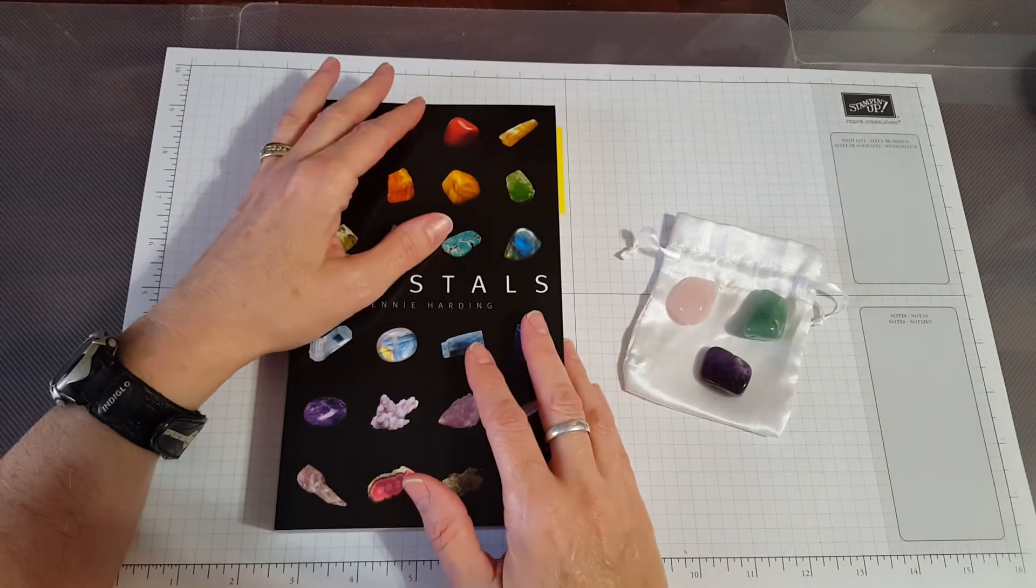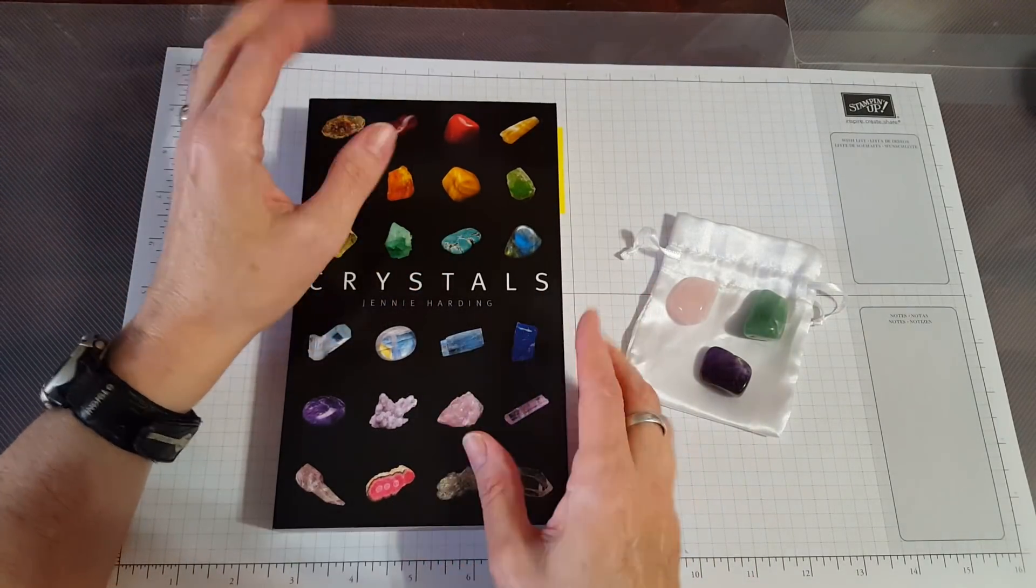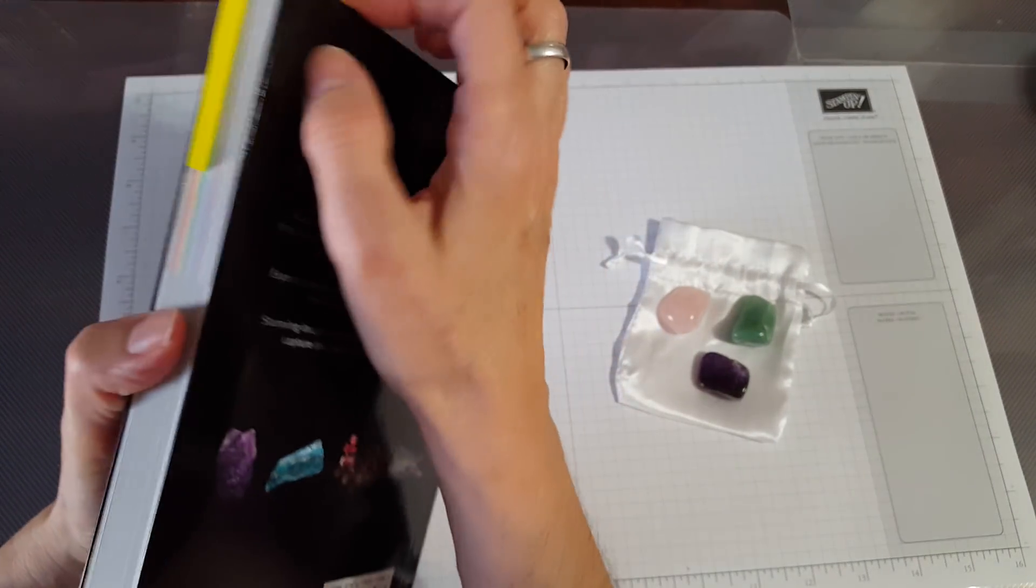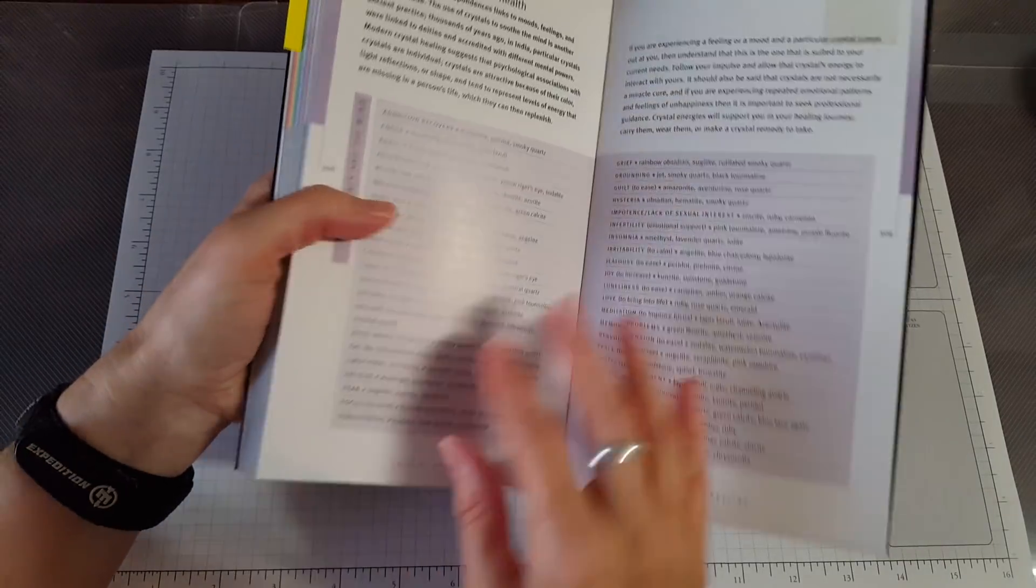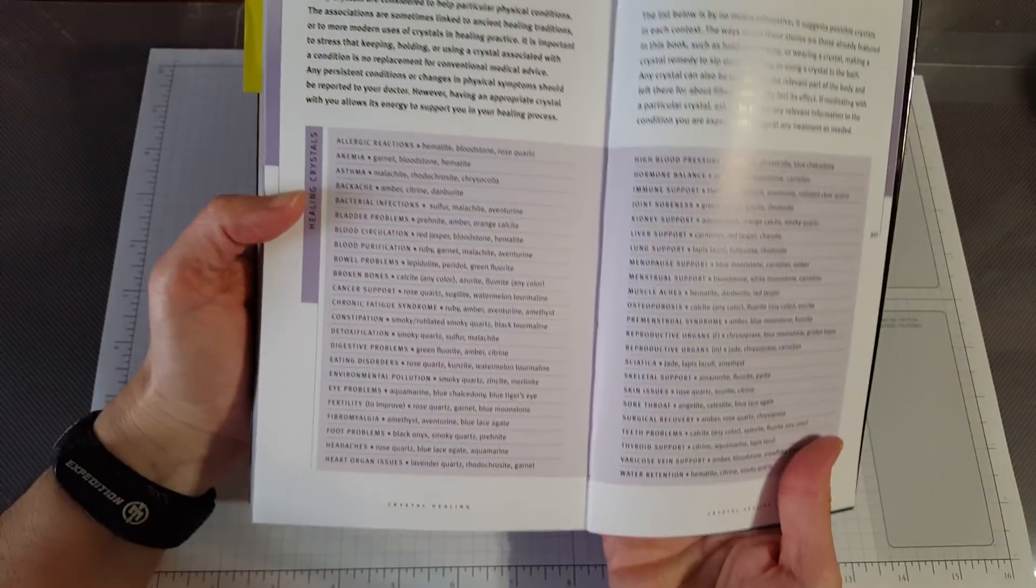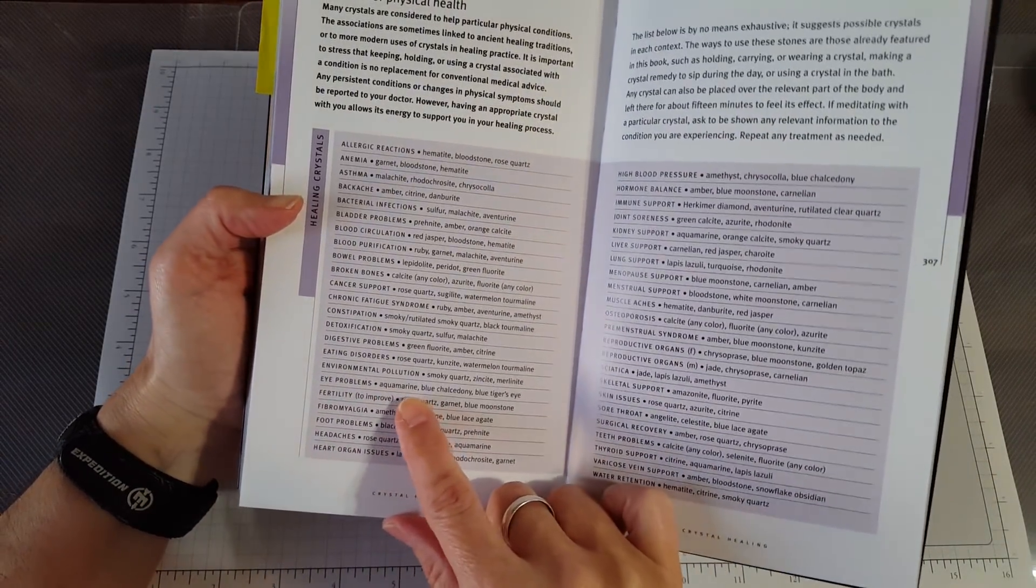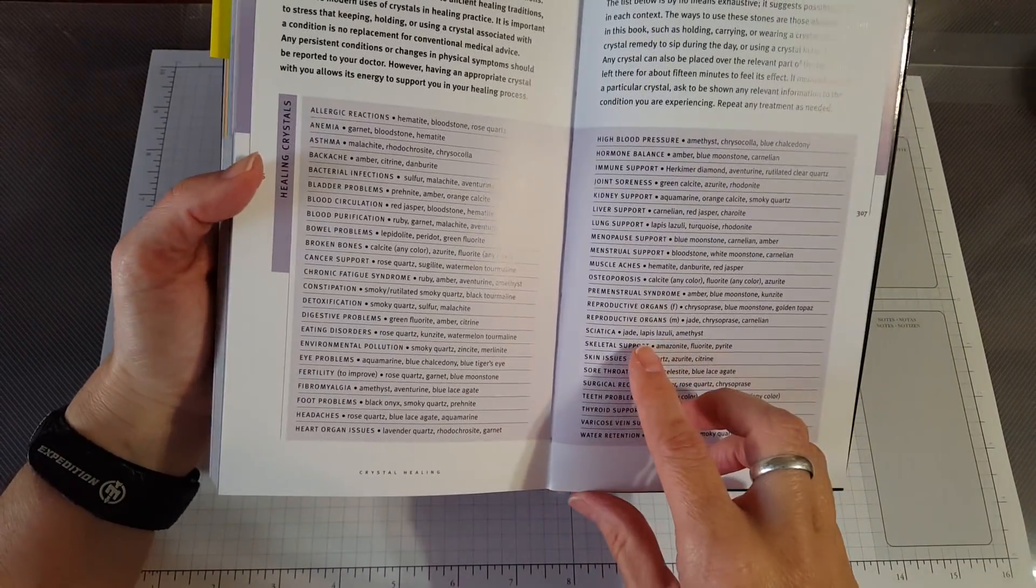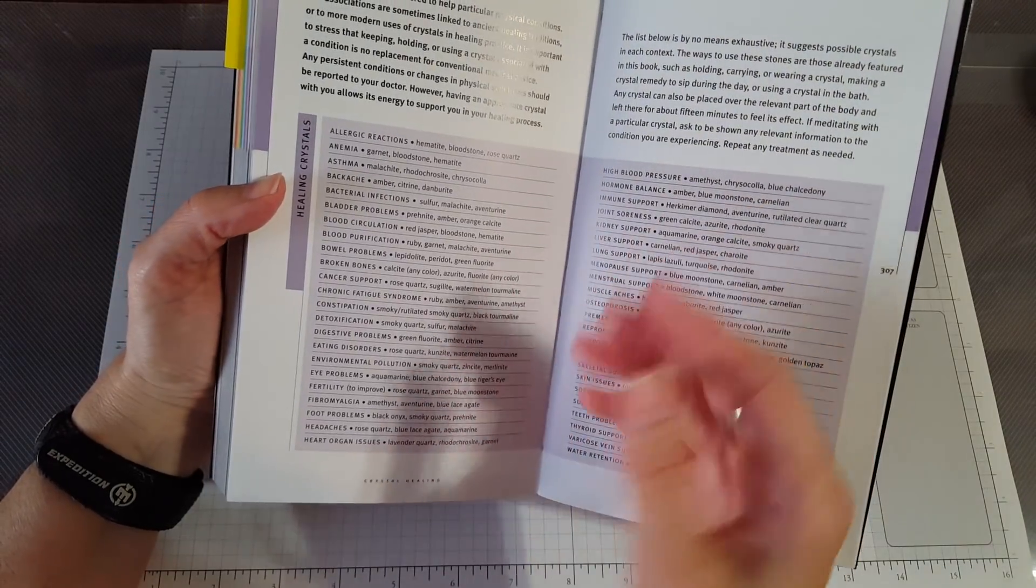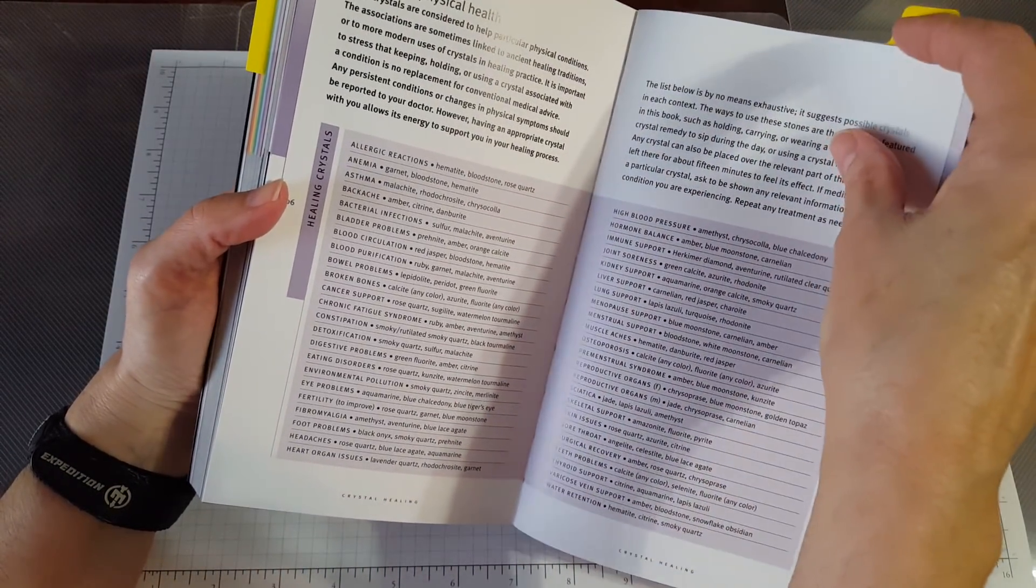So this new book, Crystals by Jenny Harding, has a neat section in the back where you can go and there's a section for crystals for physical health. This section gives you things like, for instance, eye problems and it lists the crystals that might be the most helpful, or lung support and it tells you that. That kind of helps, it really does, because it gets you closer to what you might need. Well I noticed, which I didn't notice at first, crystals for psychological health.